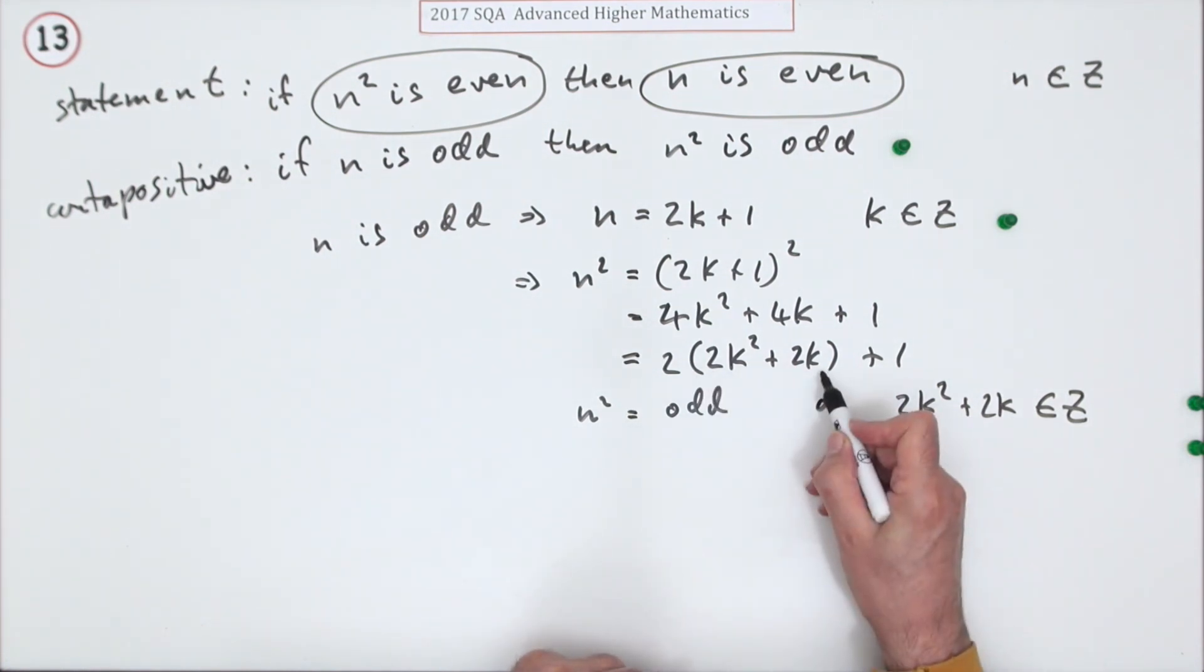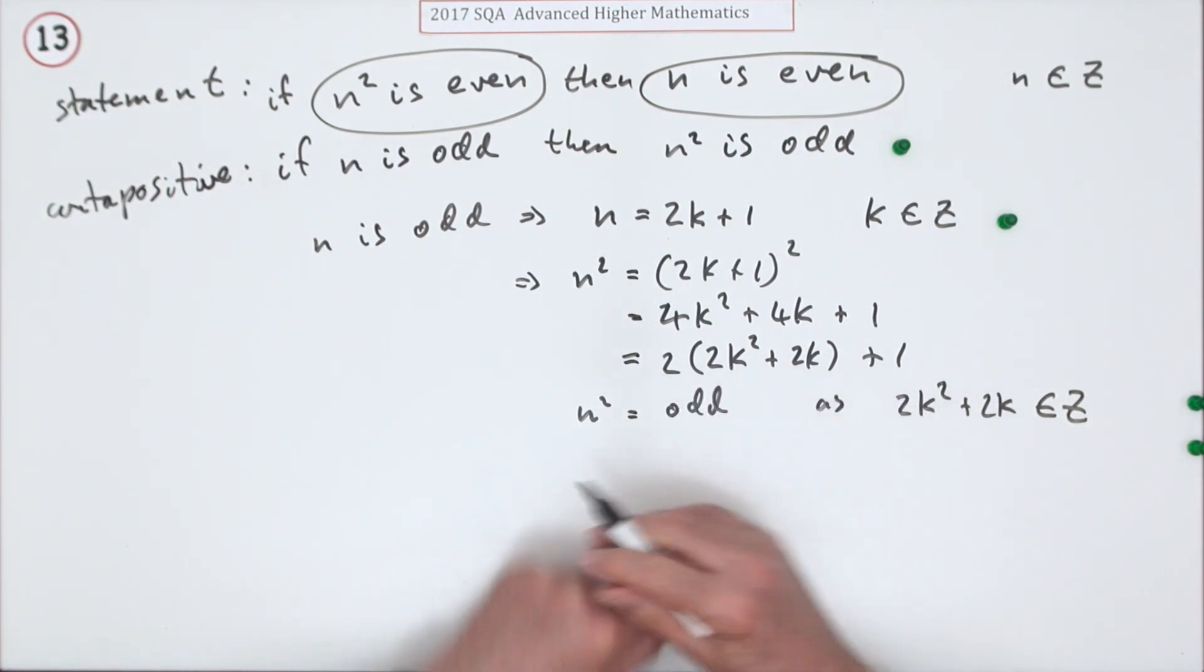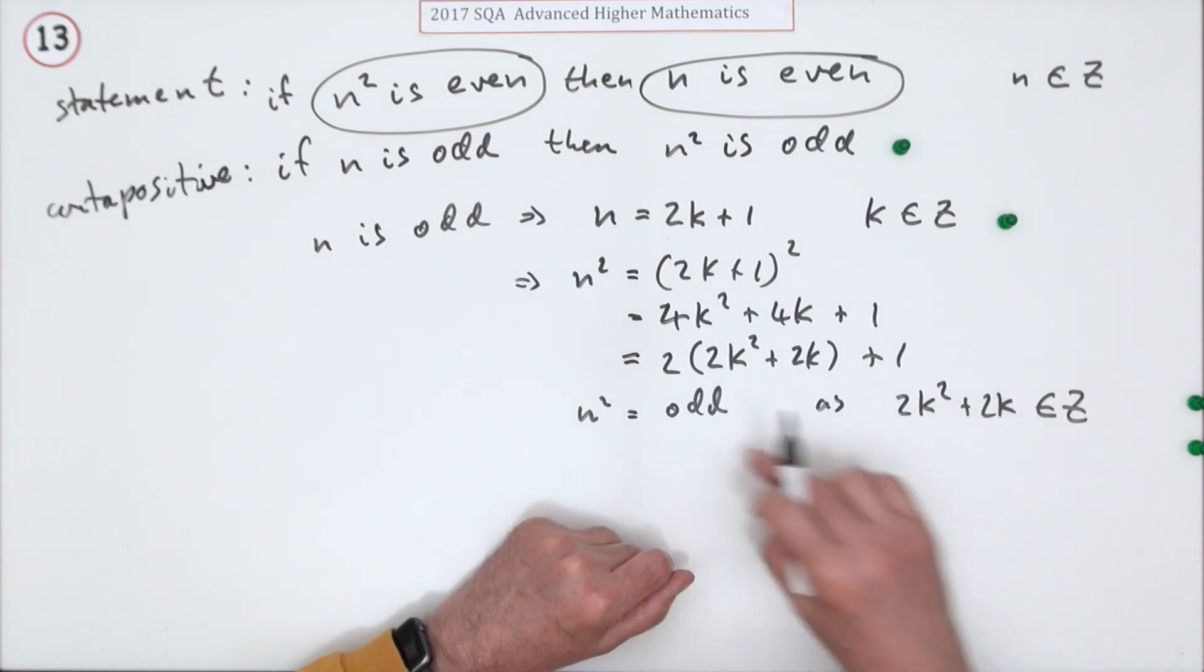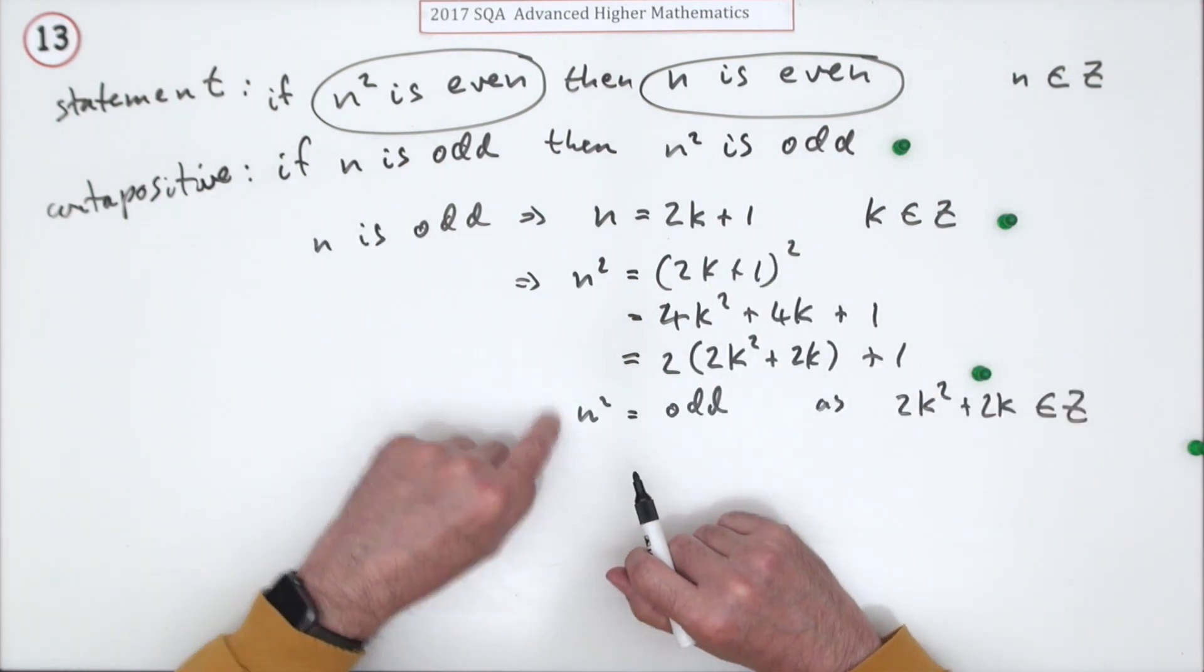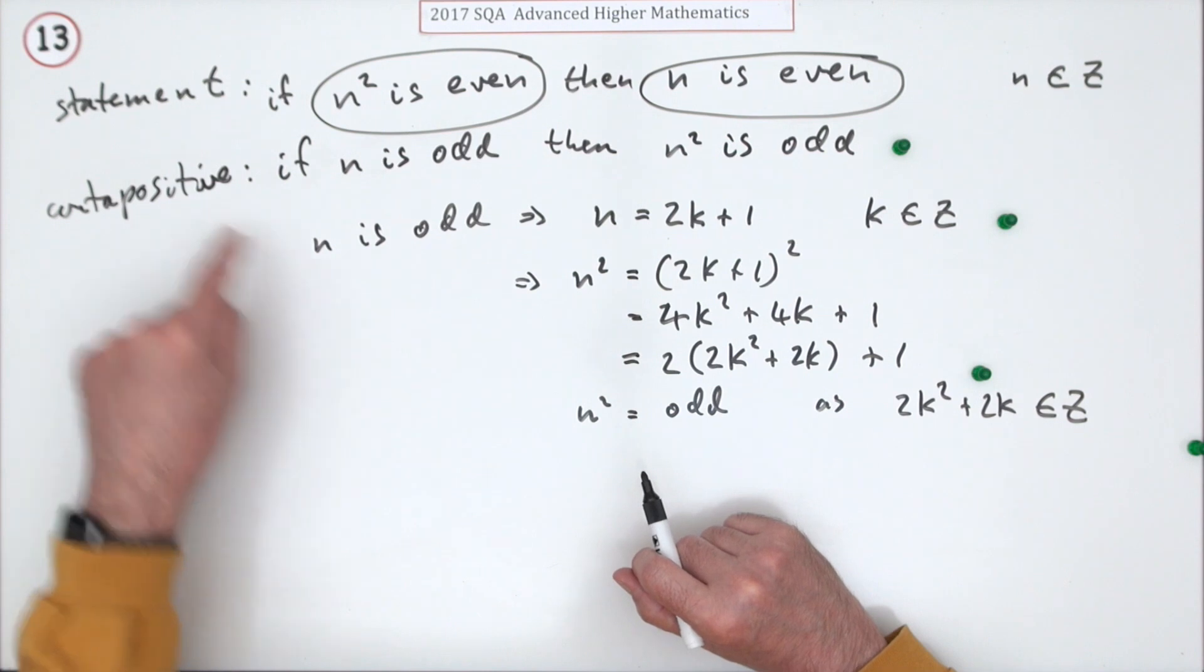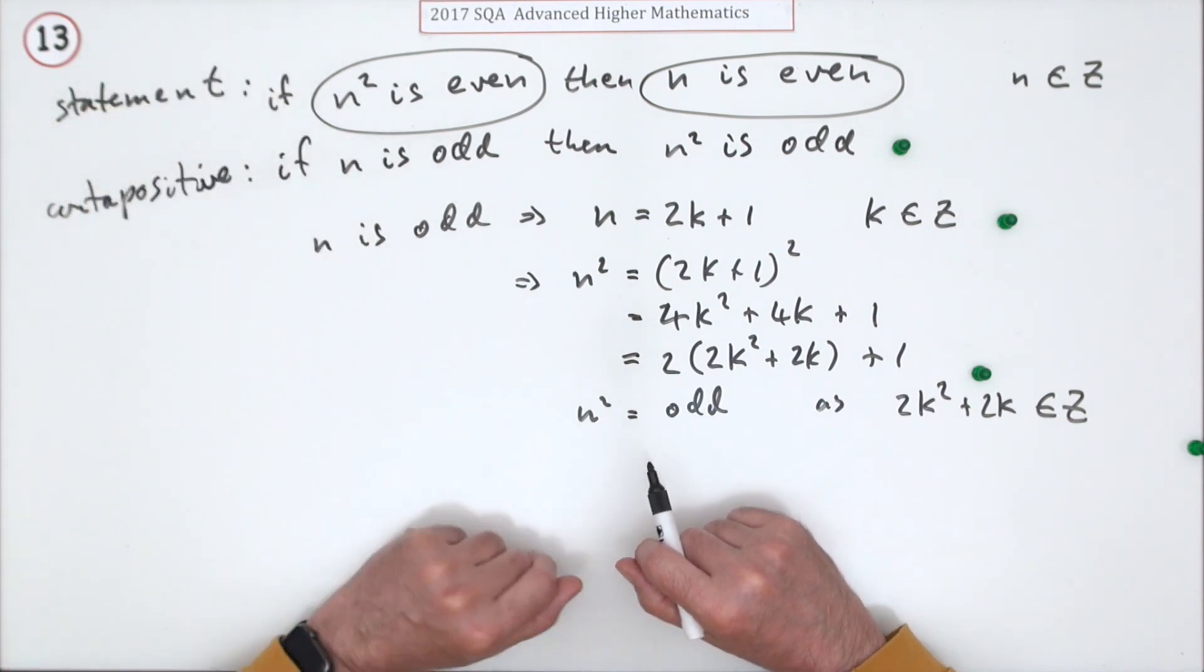Of course, if that expression there wasn't an integer, that's not necessarily an odd number. That should really be included. I haven't mentioned that in the marking scheme, but it should really be there. There's the next mark. Now you just state what you've done. You've proven the contrapositive statement. So that means the original statement is true.